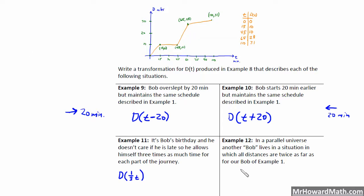In a parallel universe, another Bob lives in a situation in which all distances are twice as far for our Bob of example 1. So the distance is twice. So the y coordinate is twice what they were before. And when we work with y, remember it's pretty simple. It's exactly what you think. So they're all twice what they were before. So that would be 2 times d of t. So that would be the transformation there. All right.